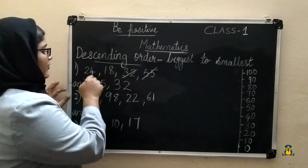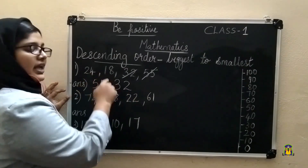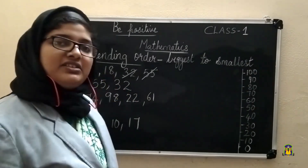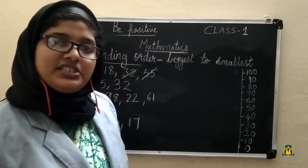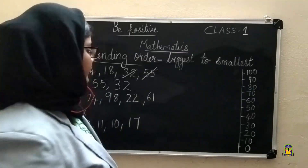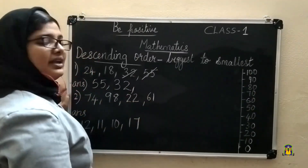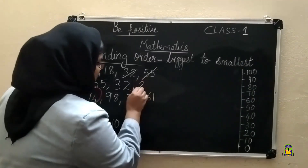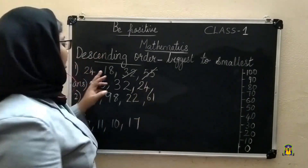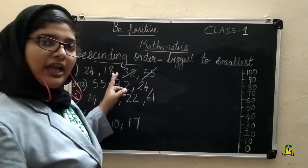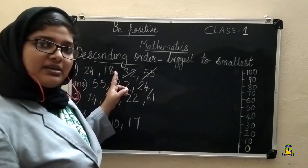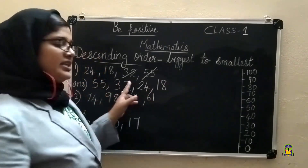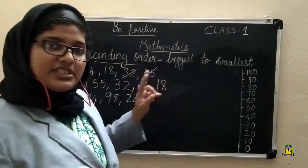Then from 24 and 18, which is the largest? That is 24. We write 24 and the remaining number is 18. So the descending order is 55, 32, 24, 18. We have finished the first example.